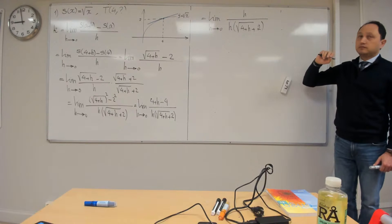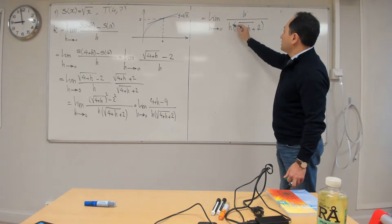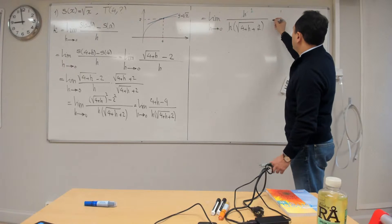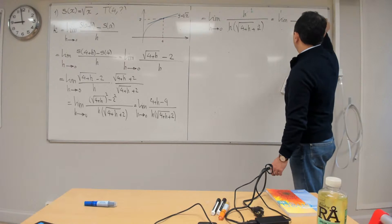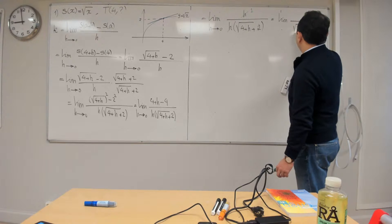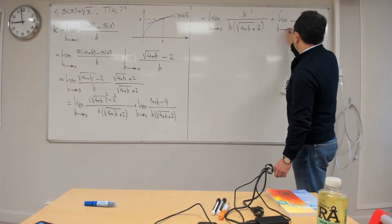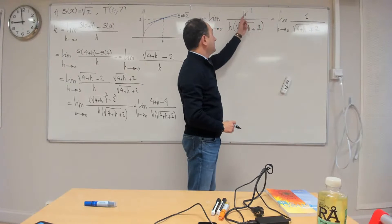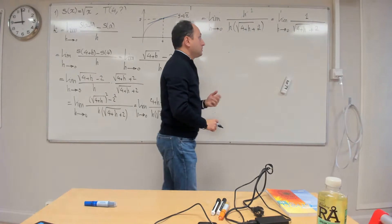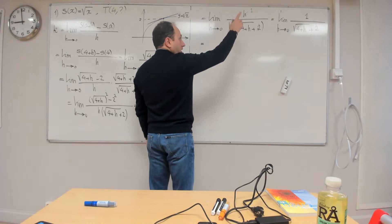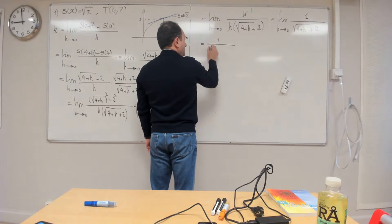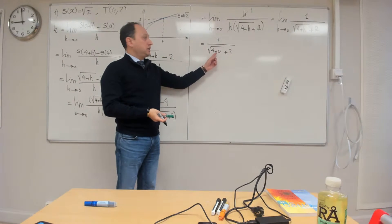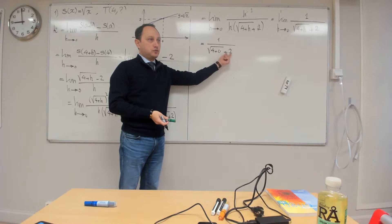I can simplify the numerator — I have positive 4 and negative 4, so those cancel. So the limit is: numerator is h, denominator is h times (square root of 4 plus h plus 2), as h goes to 0. I can simplify this h with that h. The numerator is left with 1, so it becomes 1 divided by square root of 4 plus h plus 2, as h goes to 0.